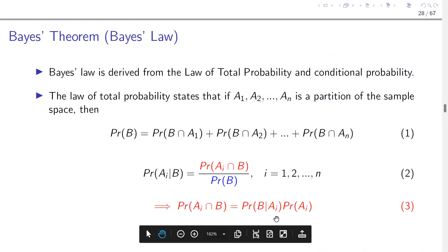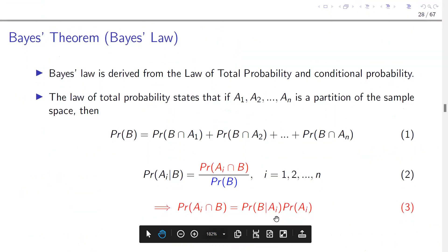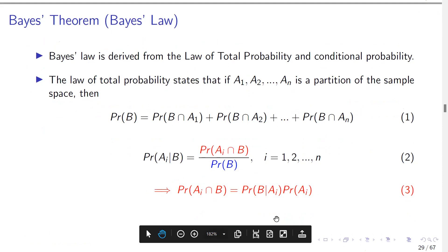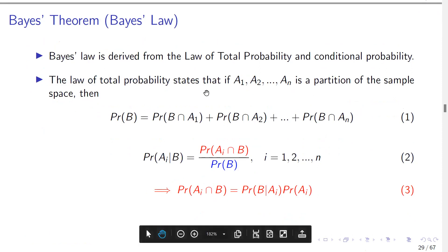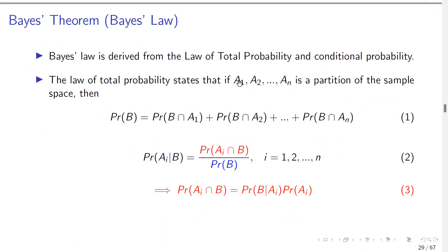Now let's look at one very important law in probability: the Bayes' theorem. The Bayes' theorem is an extension of the law of total probability, combining it with conditional probability. The law of total probability states that if A1, A2, ..., AN is a partition of some sample space, then P(B) = P(B∩A1) + P(B∩A2) + ... + P(B∩AN).